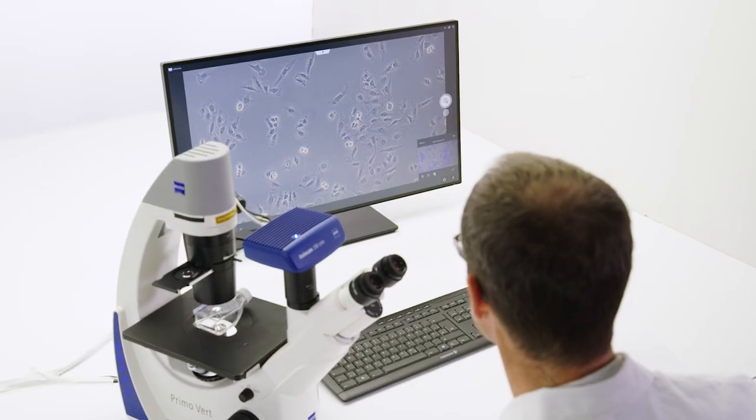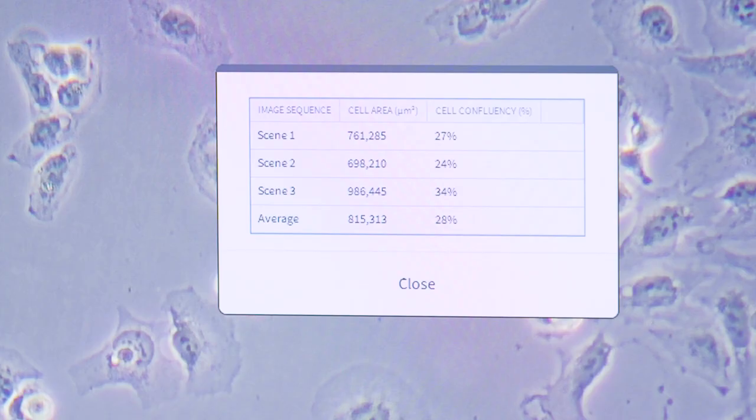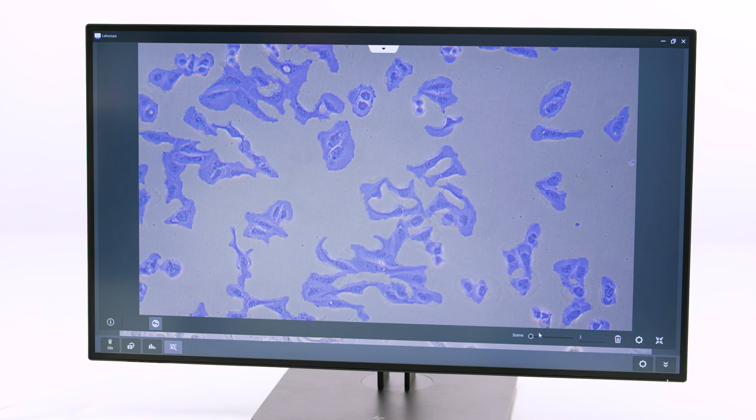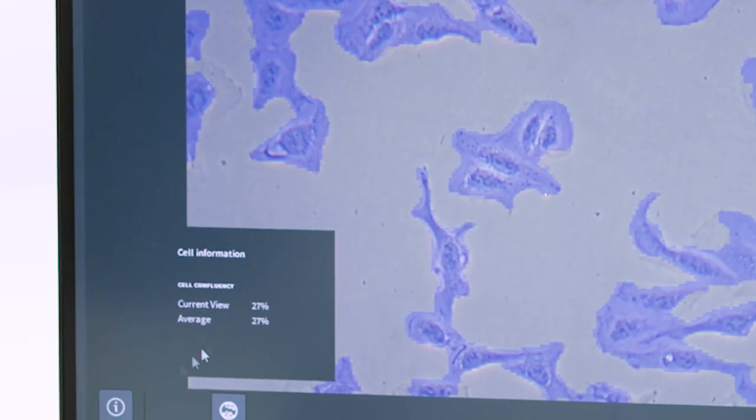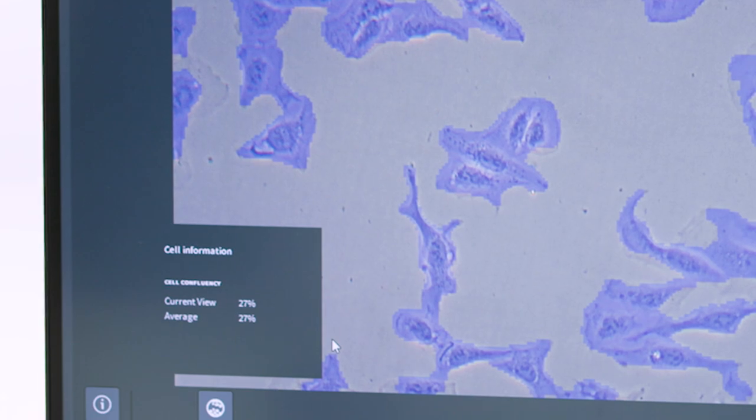The software will also calculate the average confluency from all acquired images. LabScope AI cell confluency is really fast and easy to use. Plus, you get meaningful and reproducible results that can raise the quality of your cell culture.